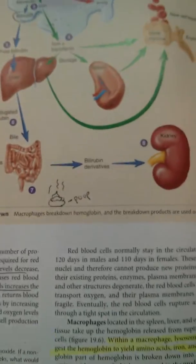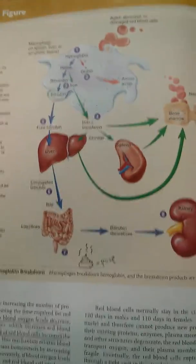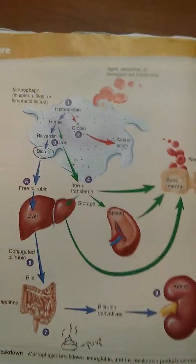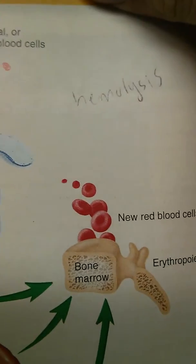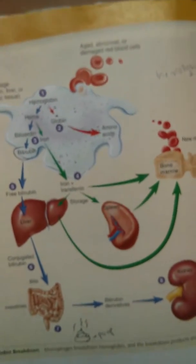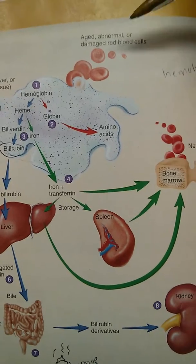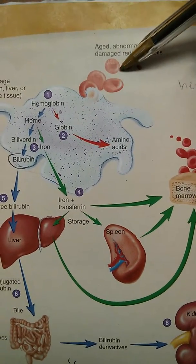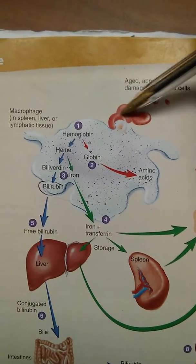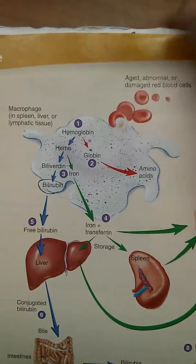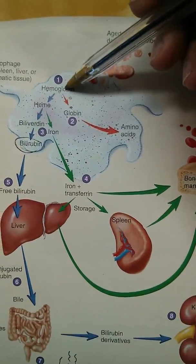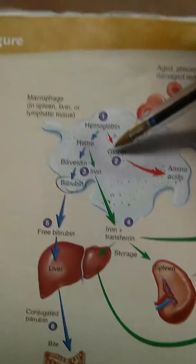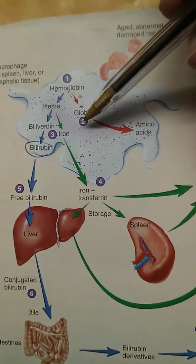Now let's talk about hemolysis again using a diagram. When a red blood cell is aged, abnormal, or damaged, it will die, and when it does, the red blood cells break down into their individual hemoglobin protein molecules. From there, the hemoglobins separate into their hemes and their globins. What you really need to know is what happens to the heme and what happens to the globin at the end.